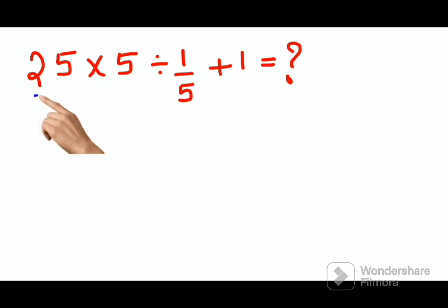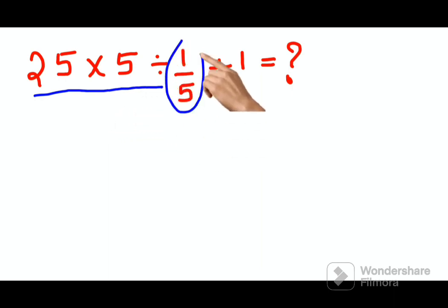Please understand we have 25 into 5 divided by 1 upon 5 plus 1. According to BODMAS or PEMDAS, whatever works for you.